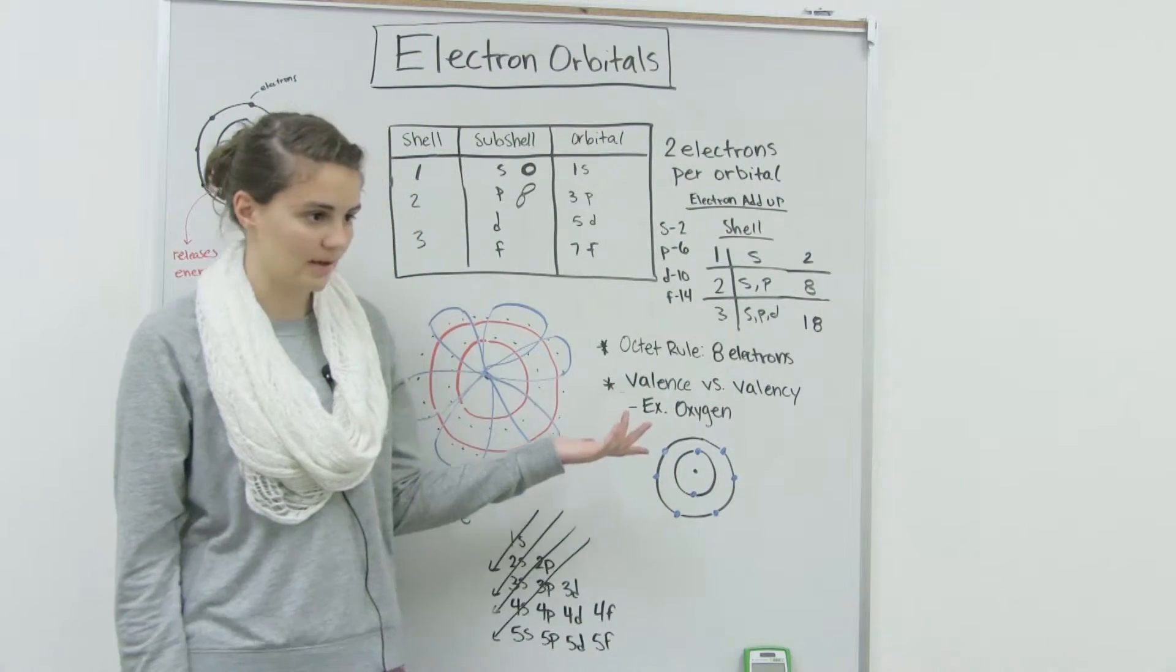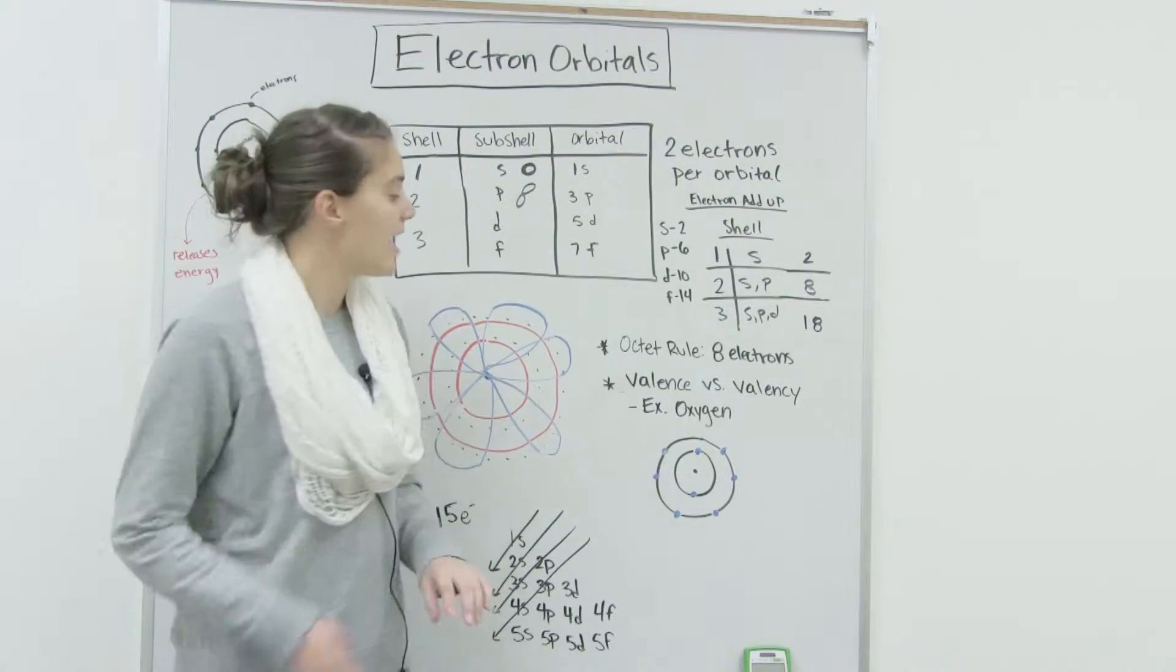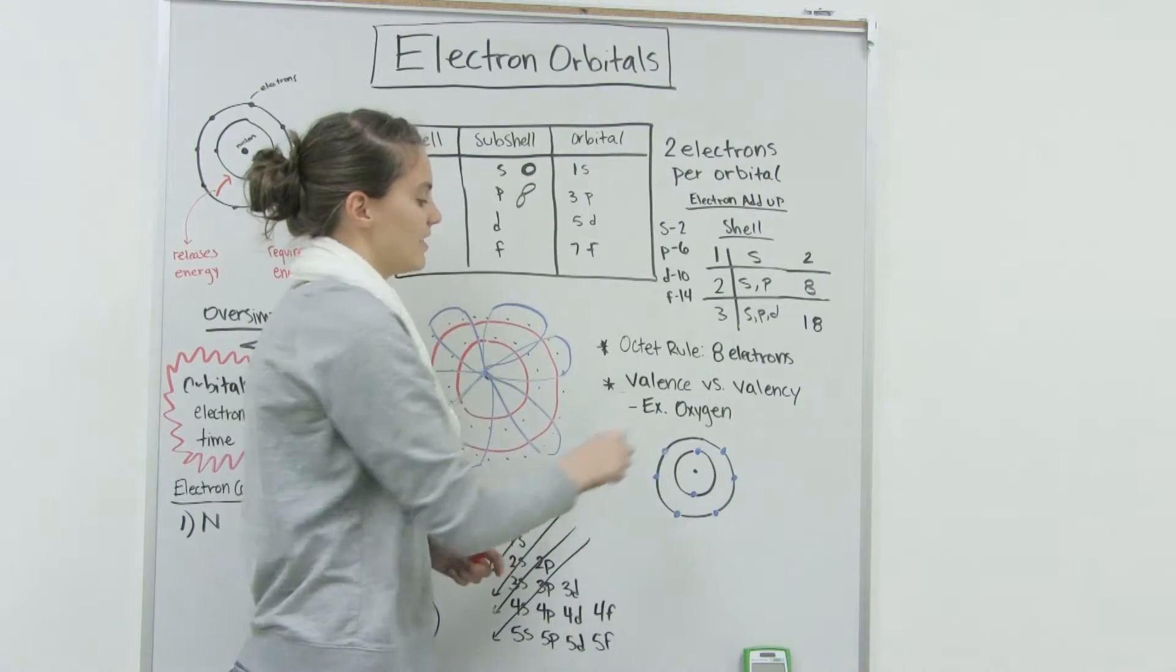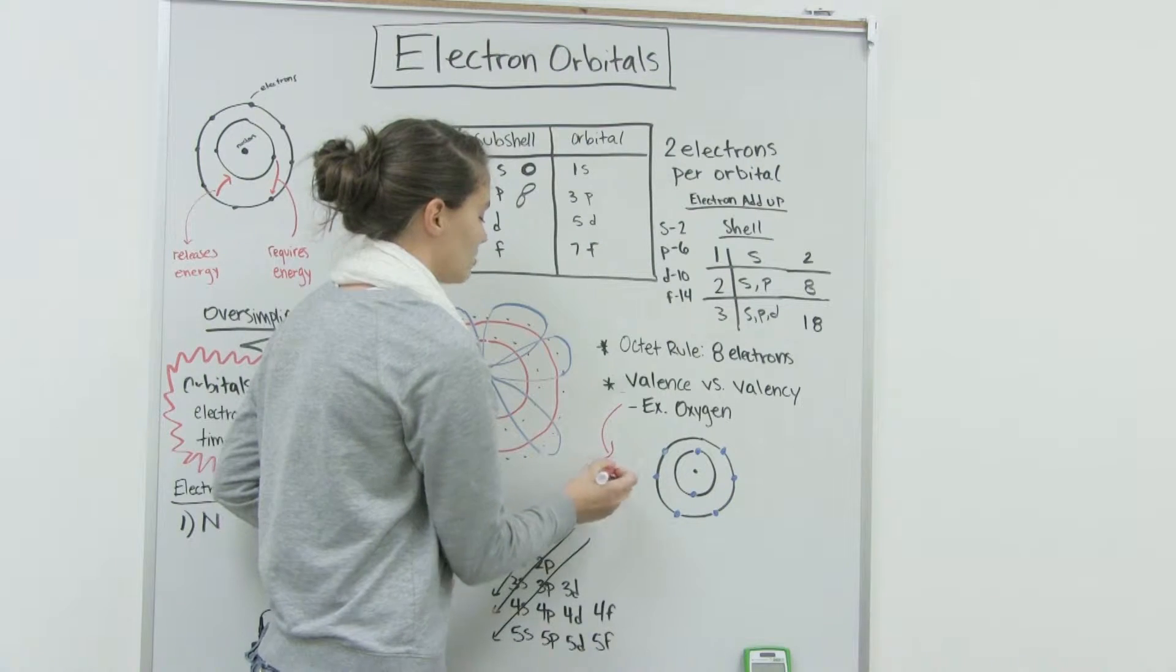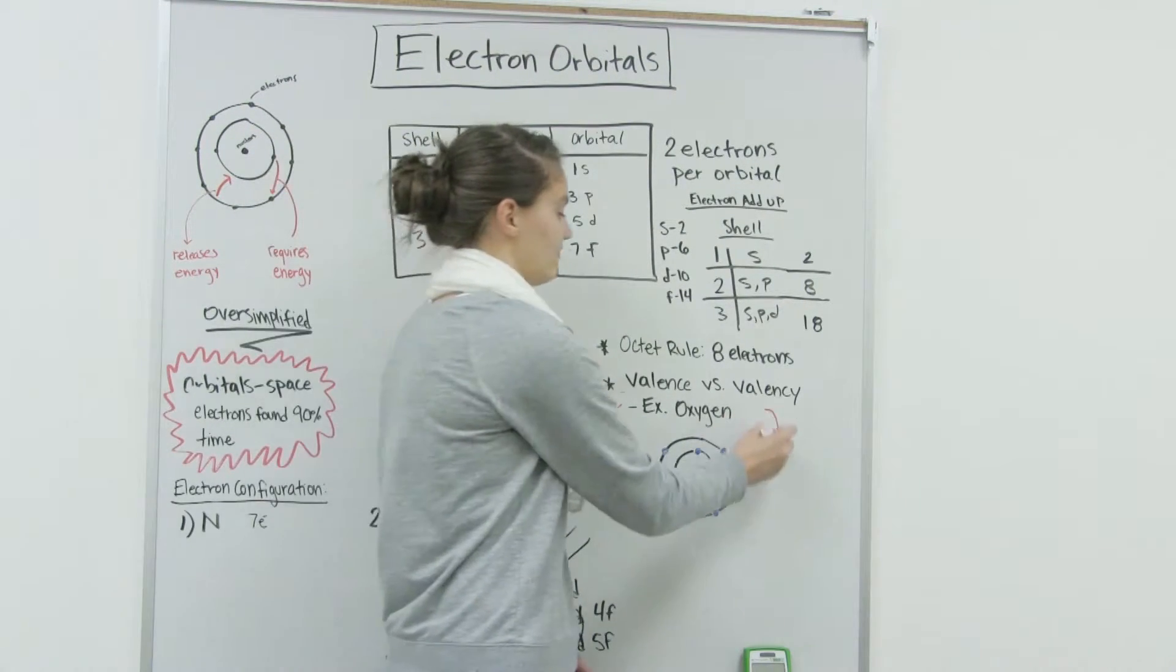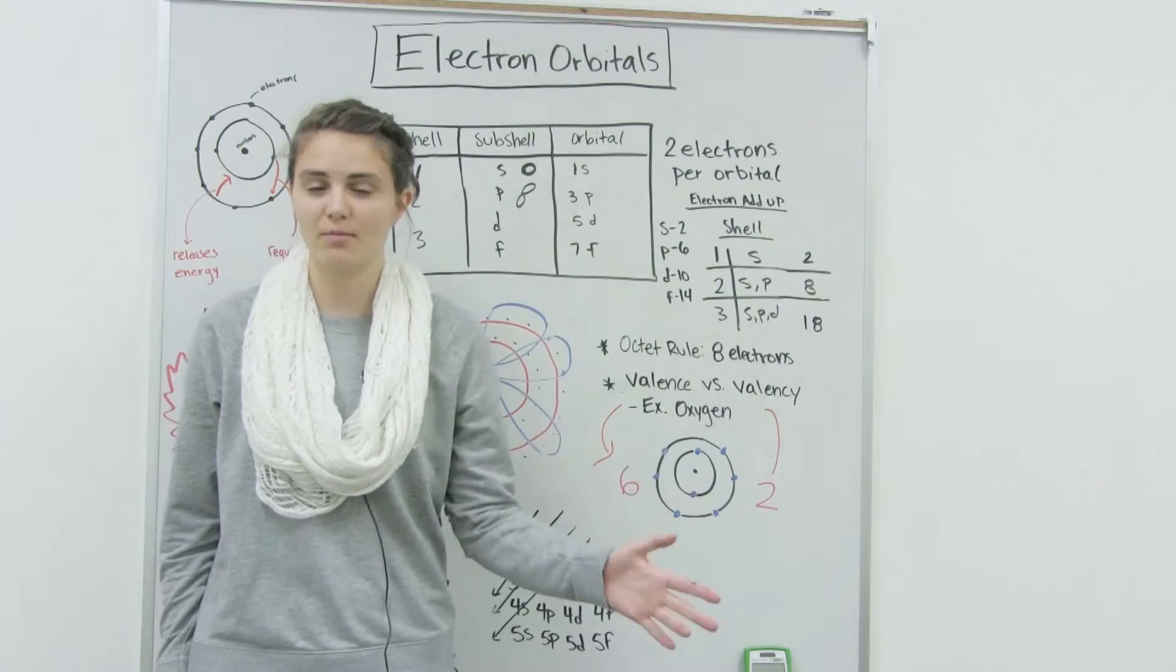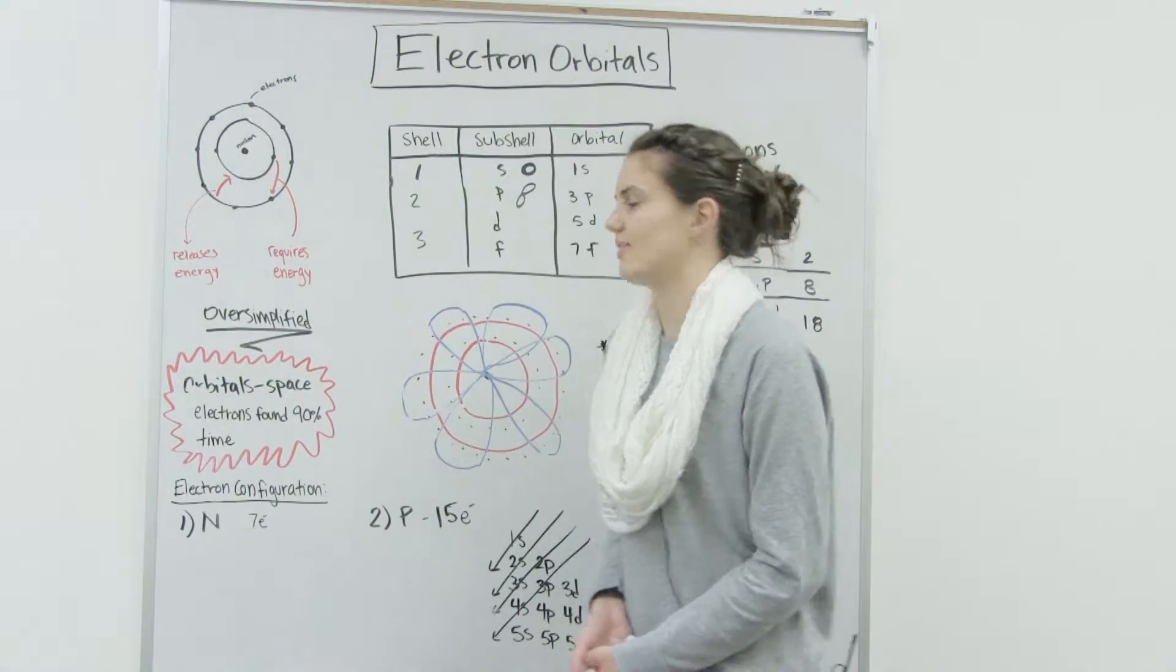For oxygen, as an example, we know that oxygen has eight electrons because its atomic number is eight. Therefore, we see that two fill the first shell because of this and then the remaining six will be in the second shell. That means that oxygen has six valence electrons and it has a valency of two because it wants two more electrons to satisfy the octet rule. You'll have to know this when you get into chemical bonding. You'll need to know how many electrons an atom will want to satisfy the octet rule.